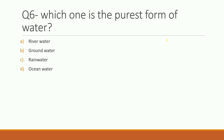Sixth question: which one is the purest form of water? Options are river water, groundwater, rainwater, or ocean water. The right answer is rainwater. Rainwater does not contain salt. Although the atmosphere has dust and water vapors, rainwater is still considered the purest form of water — though we don't drink it directly.